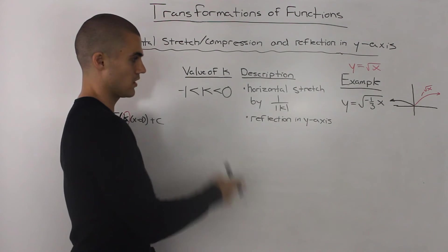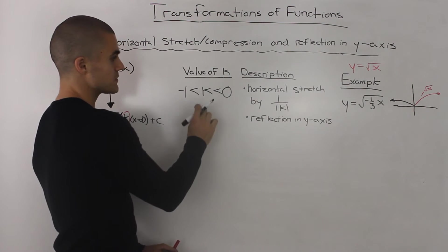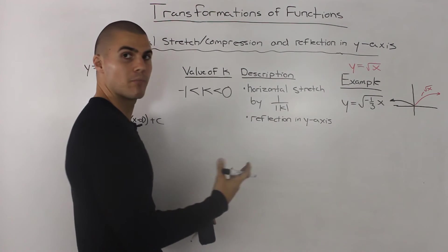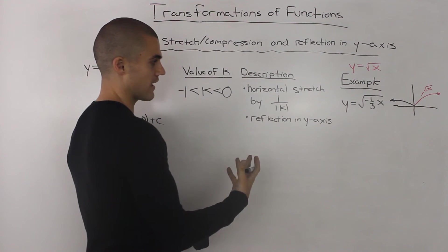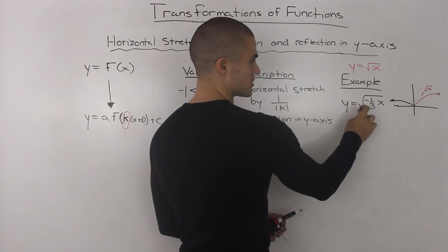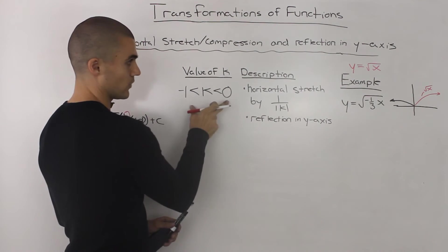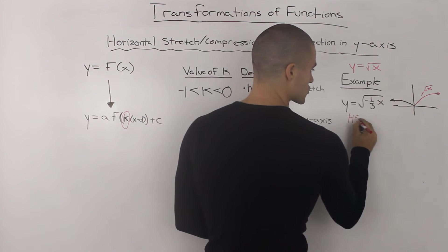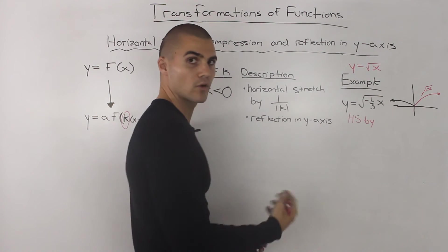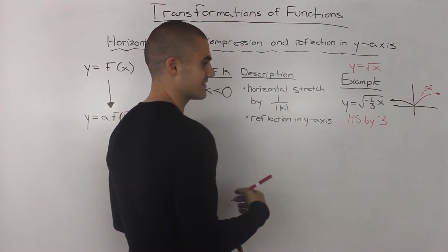The next case is if k is between negative 1 and 0. In this case, the function undergoes a horizontal stretch by a factor of 1 over the absolute value of k, and it is also reflected in the y-axis because k is negative. For example, transforming the square root of x to the square root of (−1/3)x — the k value is −1/3, so it's between −1 and 0. The factor is 1 over |−1/3| = 3, so it's a horizontal stretch by a factor of 3, and it's reflected in the y-axis.